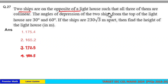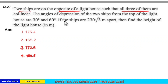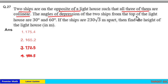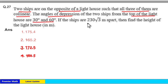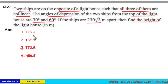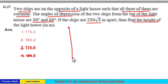Two ships are on opposite sides of a lighthouse such that all three are collinear. The angles of depression of the two ships from the top of the lighthouse are 30 degrees and 60 degrees. If the ships are 230√3 meters apart, find the height of the lighthouse.